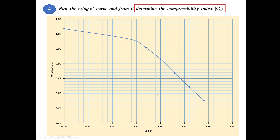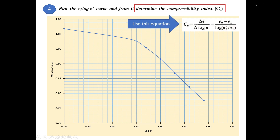What we want to do with this plot is to determine the compression index. We use this equation, which essentially determines the slope at the straight portion of the plot. Looking at the dotted line, you can identify the straight portion — there are four points here, and the line starts straight from a certain point through to the end. That straight portion is our reference.